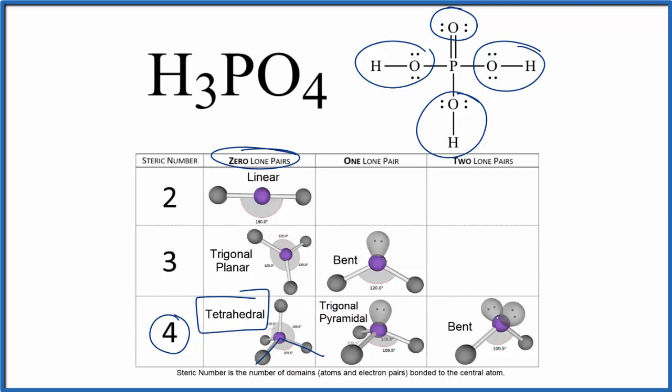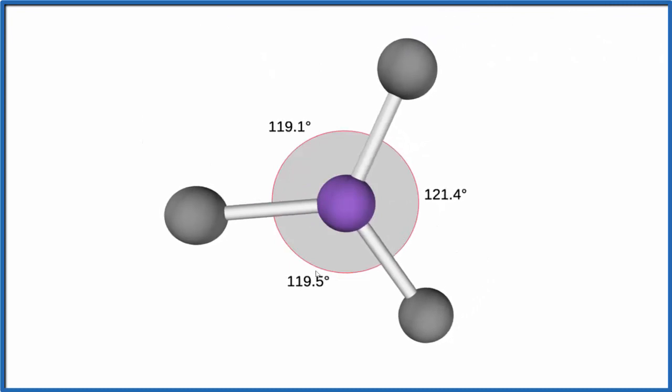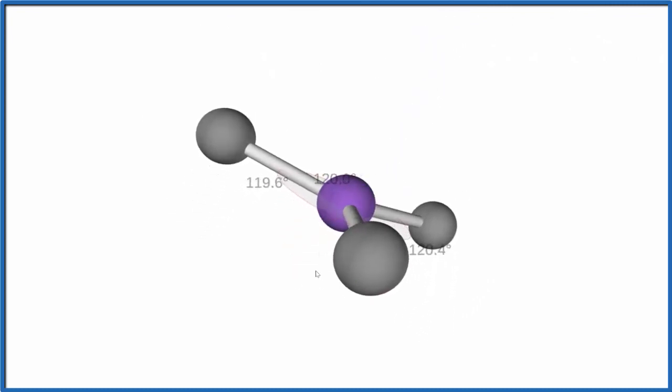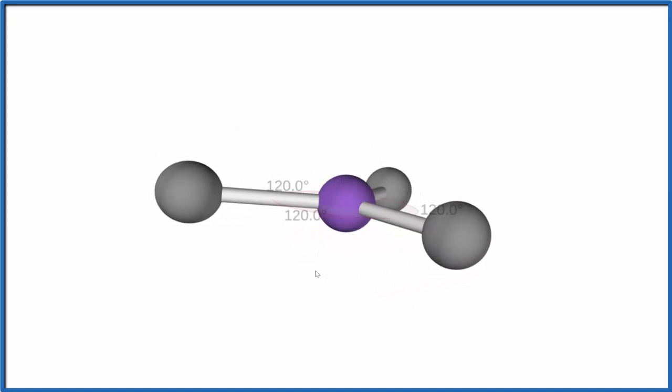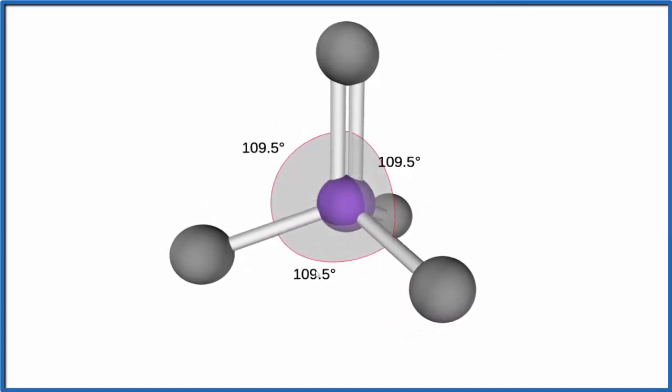Let's try to visualize this in three dimensions. So the purple, that'll be our central atom, the phosphorus atom. We're going to add those four groups, one, two, three. They all spread out to be as far as they can from each other. And then we'll add that last oxygen there with a double bond. And we end up with a tetrahedral molecular geometry.